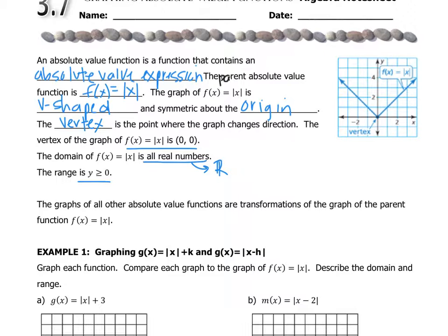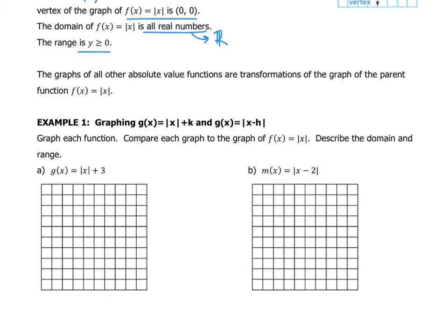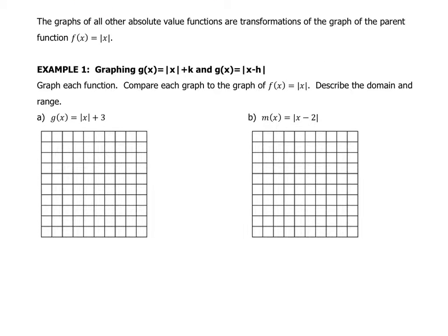Every other graph is some sort of transformation of this parent function. In example one, we have to graph the function, compare it to the parent function, and describe the domain and range. The first thing we do anytime we make a graph we don't know is make an XY table. I'm going to center it at 0 by putting the vertex in the middle, leaving space for numbers above and below: negative 2, negative 1, 0, 1, 2.